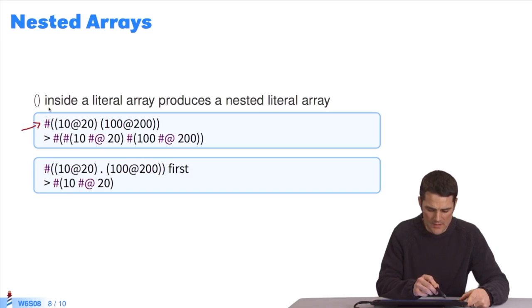Here's another somewhat more complicated example. I start with hashtag parentheses. And I reuse parentheses inside. So this is one point. And I reuse parentheses to produce a nested literal array. We see that nothing was interpreted in this literal array because it was created at compile time by the compiler. So we have one array that contains nested arrays. You can see them here. The first nested array contains 10, the symbol at, the integer 20, etc.